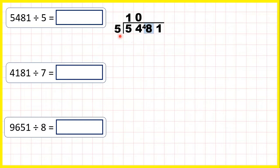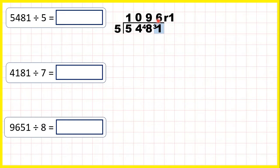Now 48 divided by 5 is 9, remainder 3, because 9 times 5 is 45, and then we need 3 more to get to 48. Now 31 divided by 5 is 6, remainder 1, but we don't have any more digits to write our remainder in front of, so we just write 6, remainder 1 in our answer. So 5,481 divided by 5 is 1,069, remainder 1.